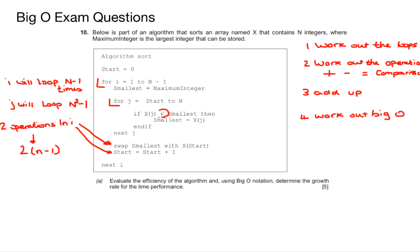The next operation that I'm looking at is inside the j loop. We have a comparison of a less than symbol, and therefore there are n squared operations carried out in the j loop. Adding these together we get a total of n squared plus two n minus one, and that was step three.